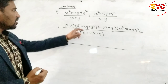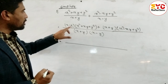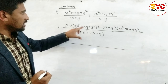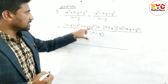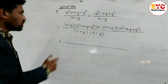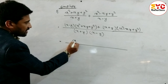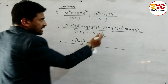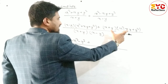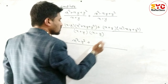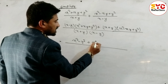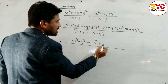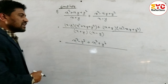You can see that (x - y)(x² + xy + y²) is in the form of a³ - b³ — the formula for a cube minus b cube — so we write x³ - y³. And (x + y)(x² - xy + y²) is the formula for a³ + b³, so we write x³ + y³.